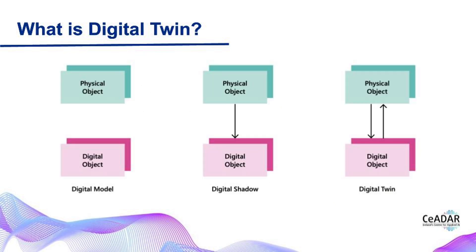Have you ever heard of digital model, digital shadow or digital twin? These are all terms used to describe a physical object in a digital format. Let's dive into the differences between these three. First up, we have the digital model. Think of it like a virtual replica of a real-world object, but there is no direct connection between the digital and the physical world. Validation of the digital model required a lot of manual data transfer — you create the digital model, build the physical prototype, test it, and keep updating the digital model until you are happy with the result. It's very complex.